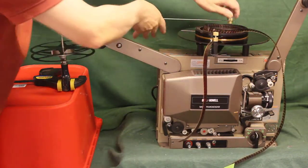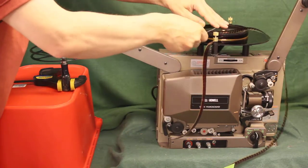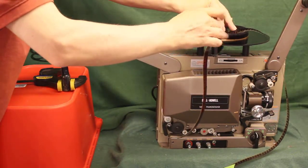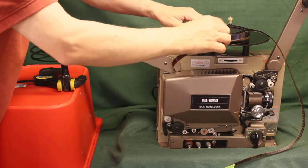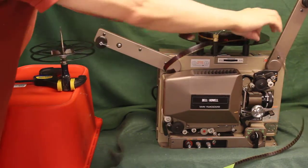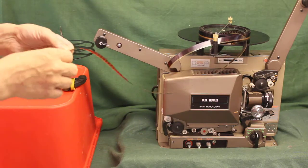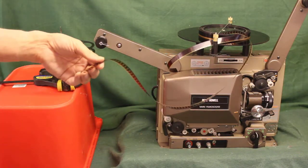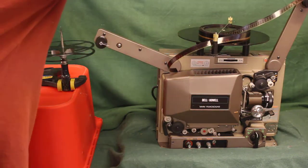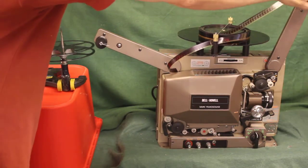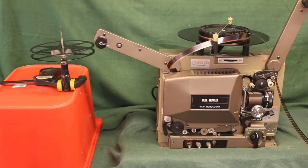And we can swing the guide bar over the film. Lock it into place there. And all we have to do now is load the film through the projector. All right. Just normal load. That will be part two.